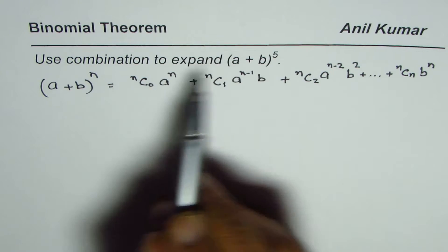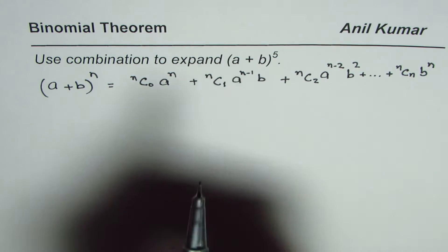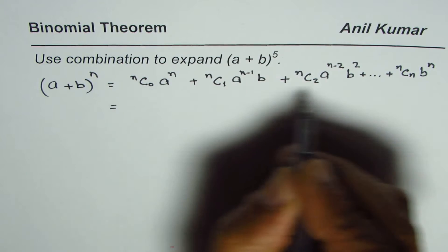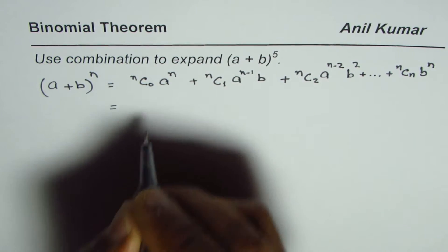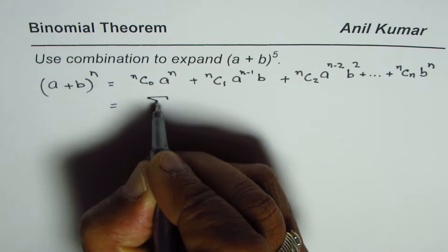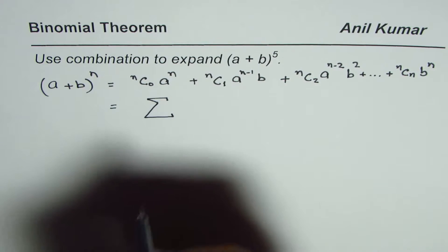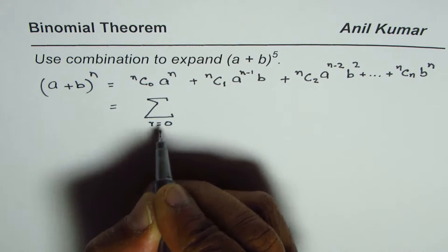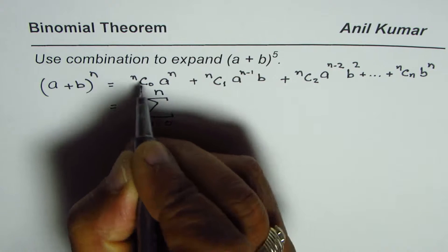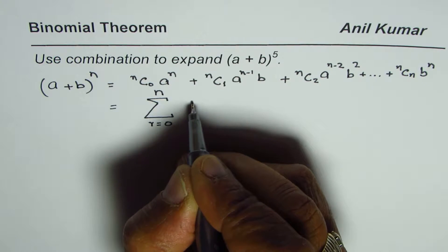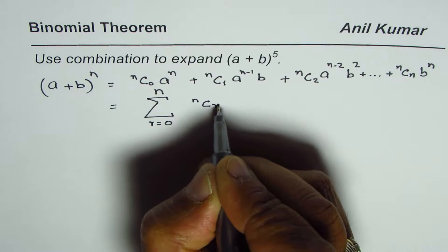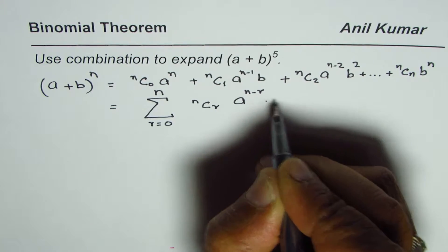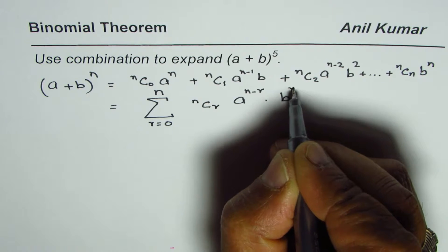In our case n is 5. Another way, or a short form of writing this series, is using the sigma notation. Let me introduce that to you: where r is from 0 to n, and the general term will be nCr times a to the power of n minus r times b to the power of r.